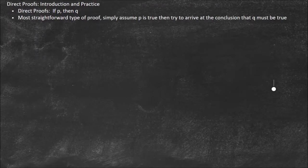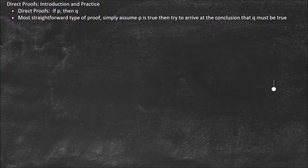Hello and welcome to today's video where we're going to do a first example video practicing proofs. These are going to focus on the most simple proof, which is the direct proof. For direct proofs it's just if P then Q. You simply assume P is true and then do some math to arrive at the conclusion that Q must also be true.